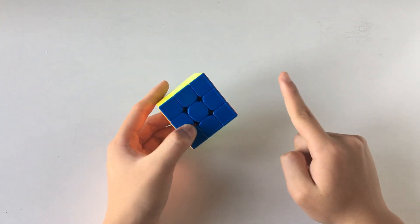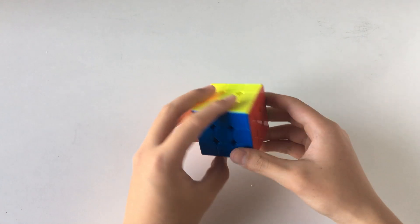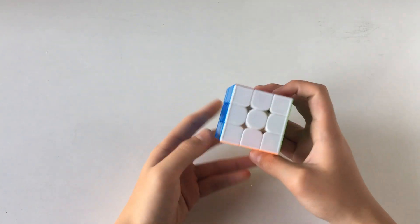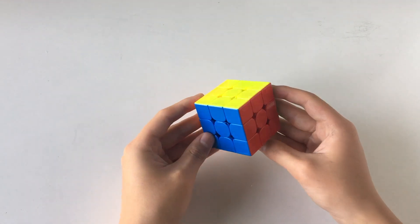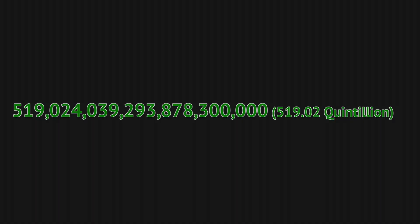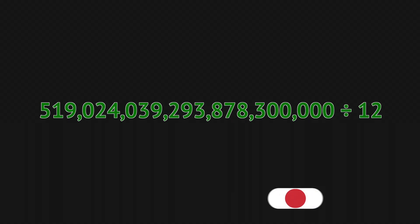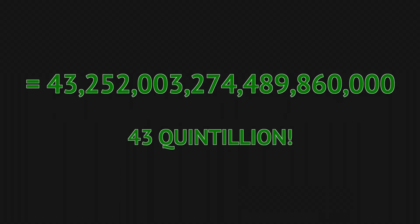But remember that only 1/12th of all of the Rubik's cube scrambles are actually solvable. That means that we need to divide this value by 12. This finally gives us 43 quintillion, 252 quadrillion, 3 trillion, 274 billion, 489 million, 860 thousand.